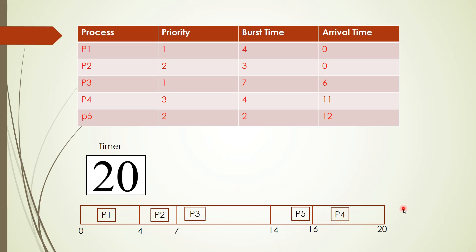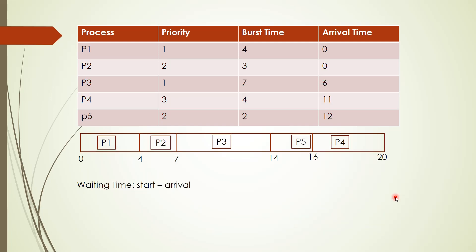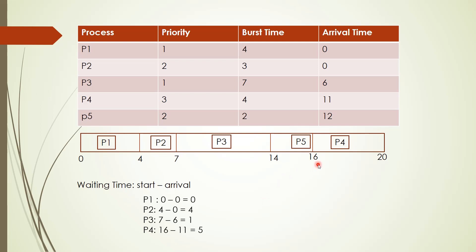Now let us look at the waiting time for each process using the formula: start time minus arrival time. P1: 0 minus 0 equals 0. P2: 4 minus 0 equals 4. P3: 7 minus 6 equals 1. P4: 16 minus 11 equals 5. P5: 14 minus 12 equals 2. You can calculate the average waiting time by summing them up and dividing by 5.